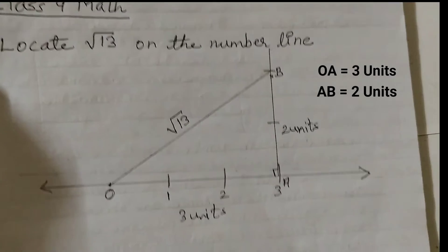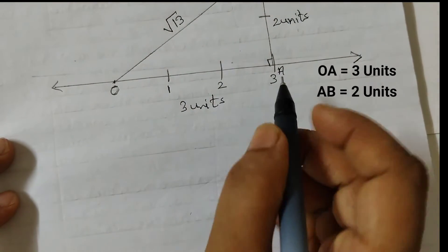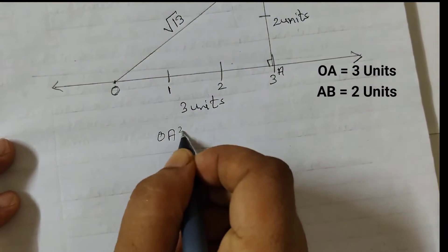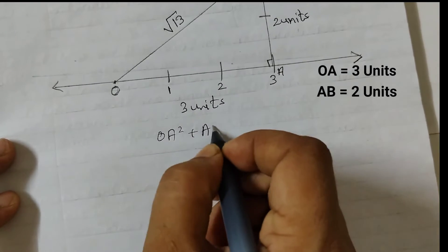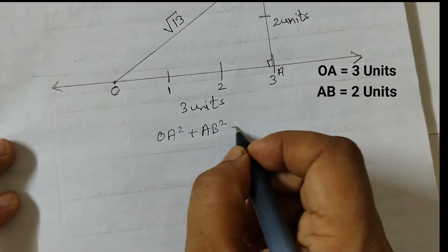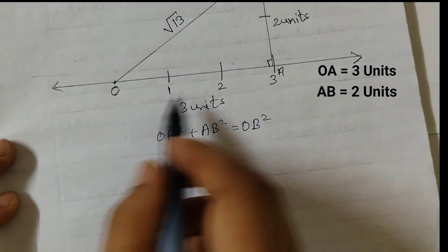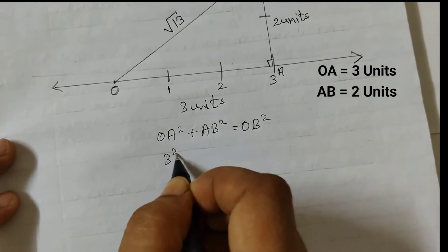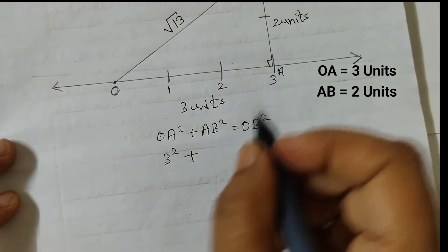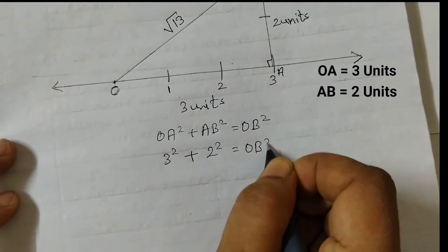According to the Pythagorean theorem, OA² + AB² = OB². So, 3² (this is 3 units) plus 2² (this is 2 units) equals OB².